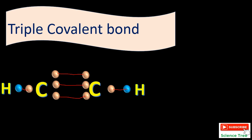Another example of a triple covalent bond is the nitrogen molecule (N₂). In a nitrogen molecule, two nitrogen atoms bond with each other. Nitrogen has five electrons in its outermost shell and shares three electrons with the other nitrogen atom — one, two, and three — so a triple covalent bond is formed between the two nitrogen atoms. Thank you so much, and for more videos keep watching.